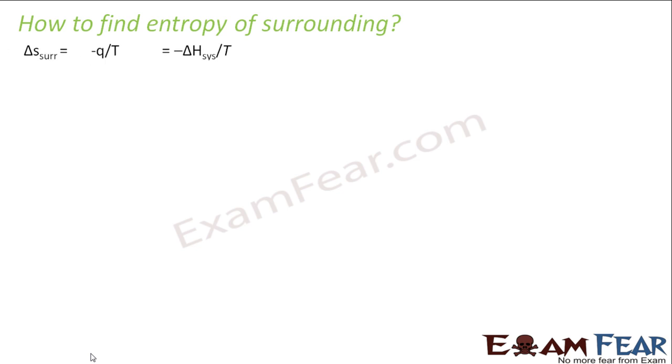So what should we do? How to find entropy of the surrounding? The easiest way is entropy of the surrounding can be minus Q by T. As I told, we can relate entropy as Q by T. This formula we have derived. So surrounding entropy we can say as minus Q by T because the system is giving some heat to the surrounding.